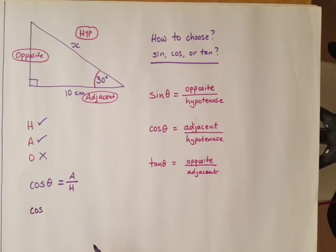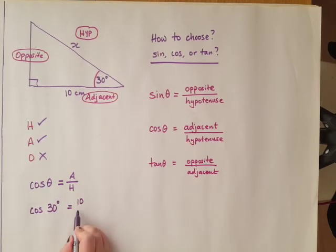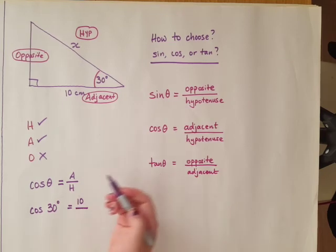We know that the angle is 30 degrees, so I replace the angle symbol with 30 degrees. I know the adjacent is 10, so I replace A with 10. I know the hypotenuse is letter x, so I write letter x.